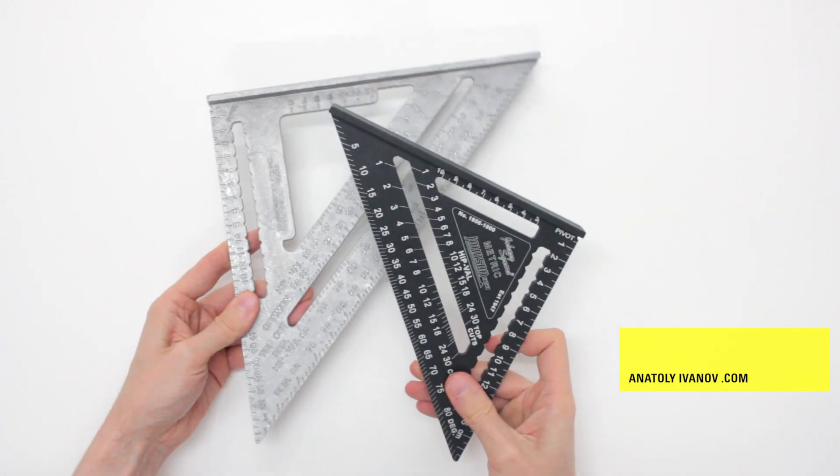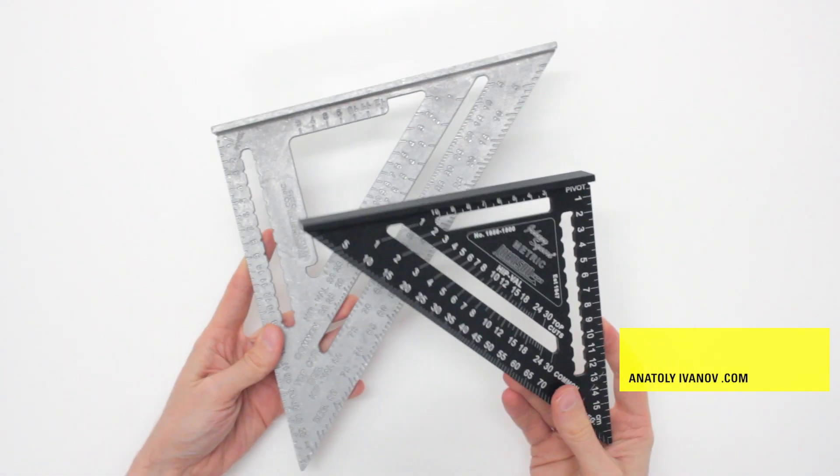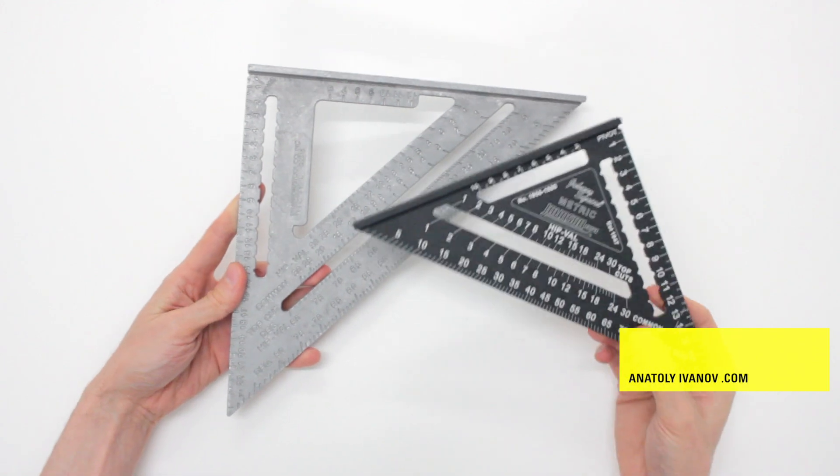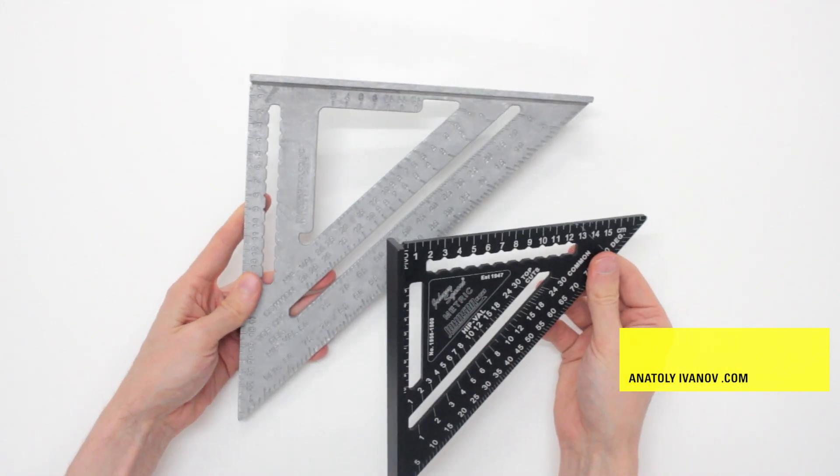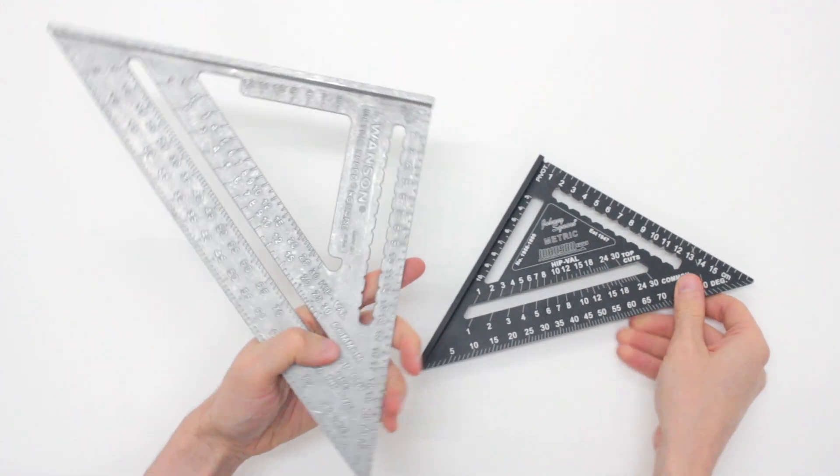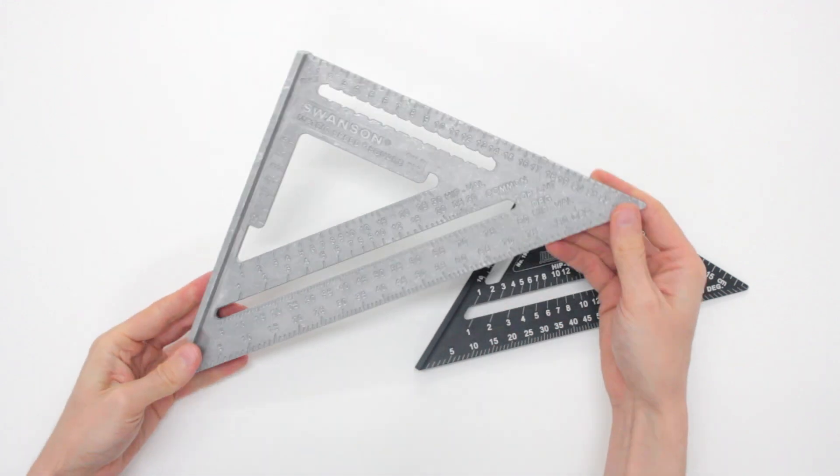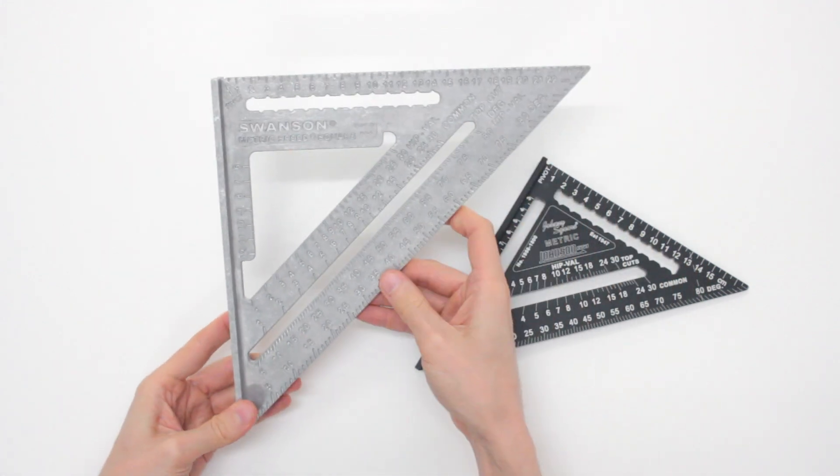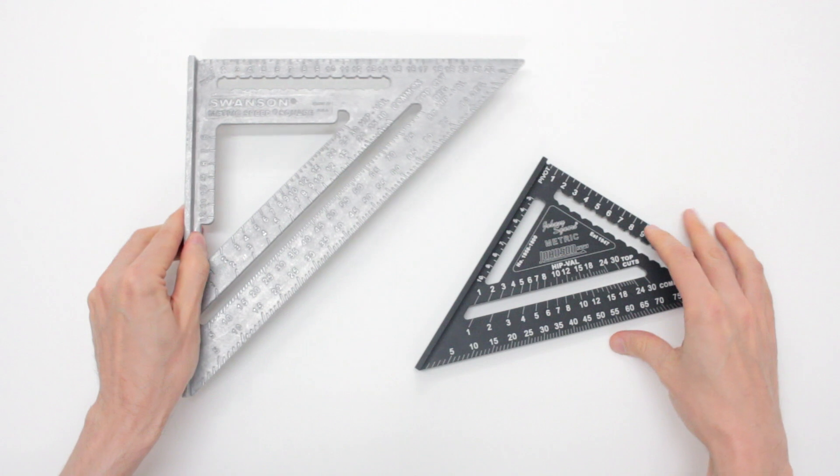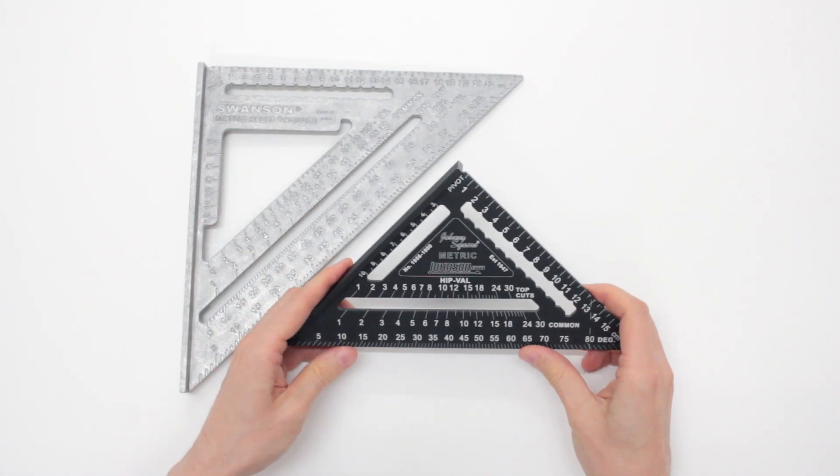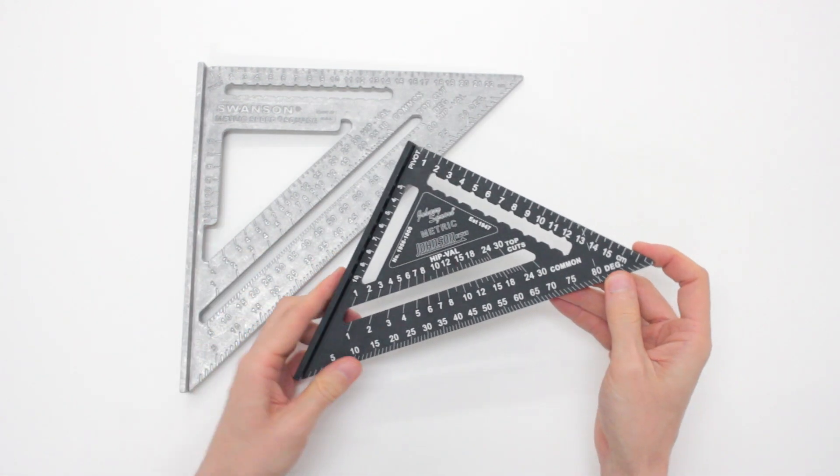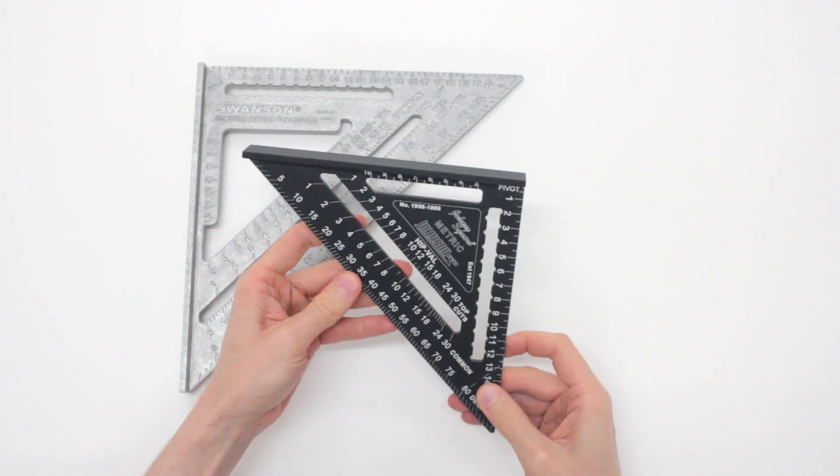Hi, my name is Anatoly Ivanov and this is a quick comparison review of the only metric speed square made by Swanson and the only metric speed square made by Johnson.